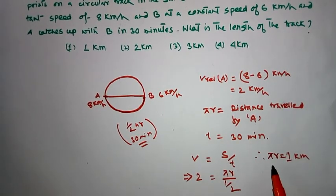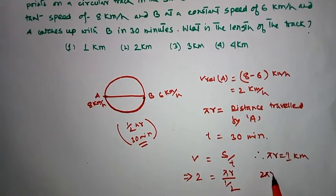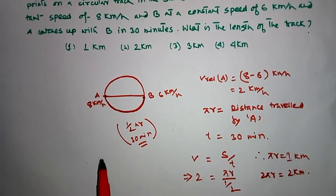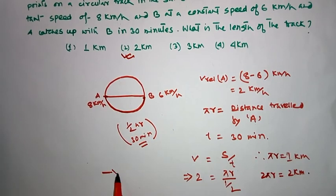Therefore, the length of the circular track, 2πr, equals 2 km. The correct answer will be 2. Thank you.